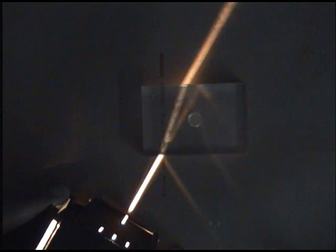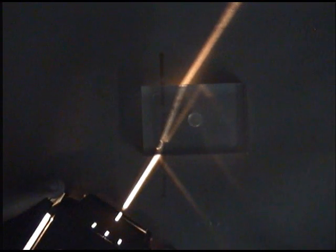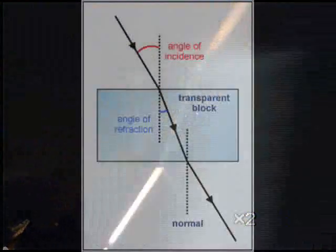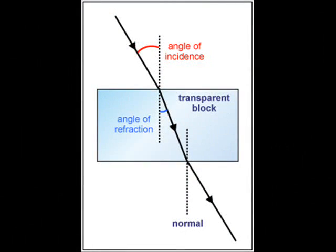If the light ray comes in at a small angle, say 20 degrees from the normal, then it changes direction a little, moves through the block, and then changes direction again. The light ray also bends away from the normal as it leaves the block.